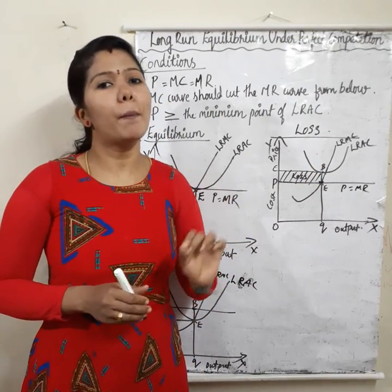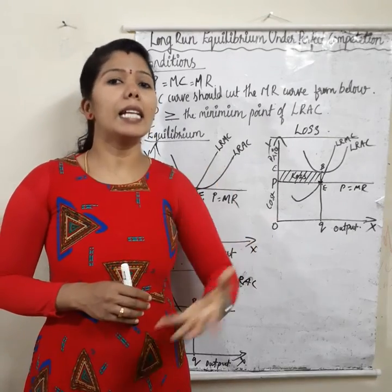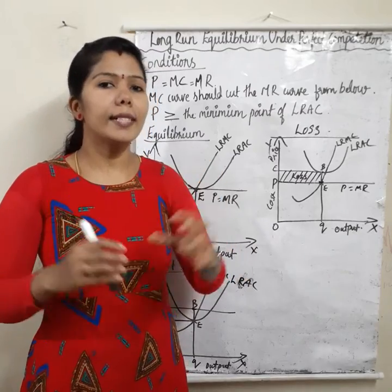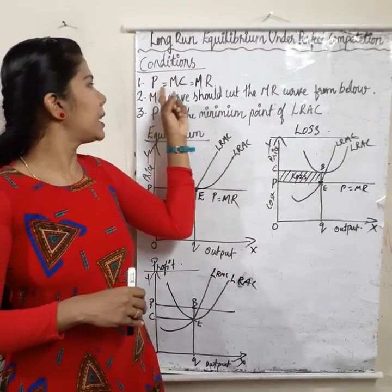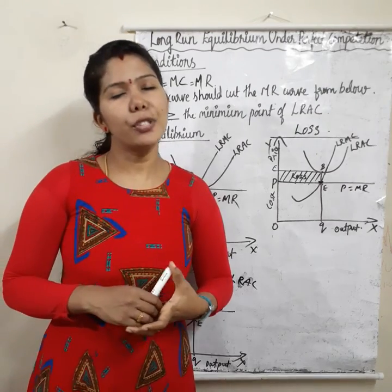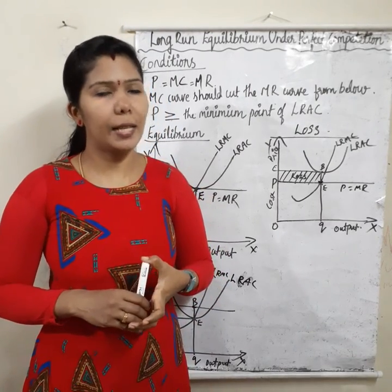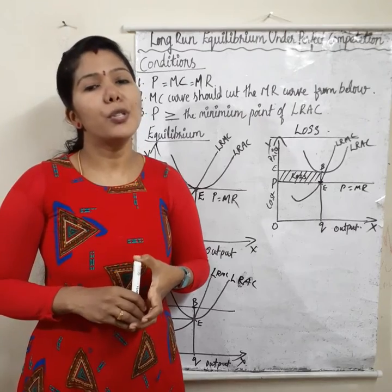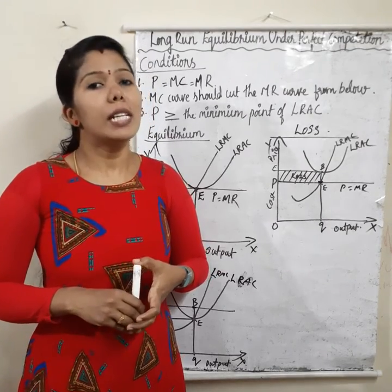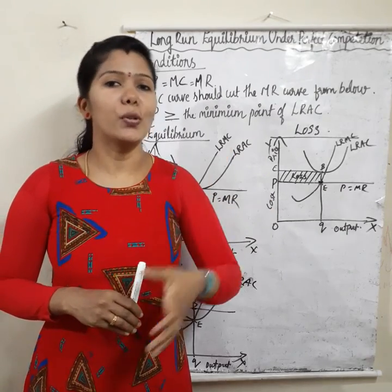Price should be equal to or greater than the minimum point of LRAC — that is the third condition. So: first condition, P equals MC equals MR; second condition, MC curve should cut MR curve from below, that is non-decreasing; third condition, price should be greater than or equal to the minimum point of long run average cost.